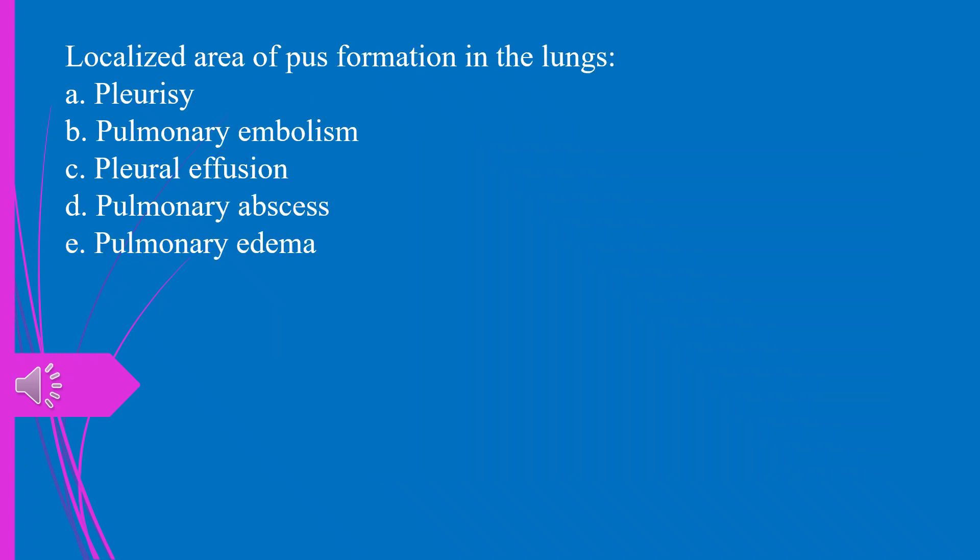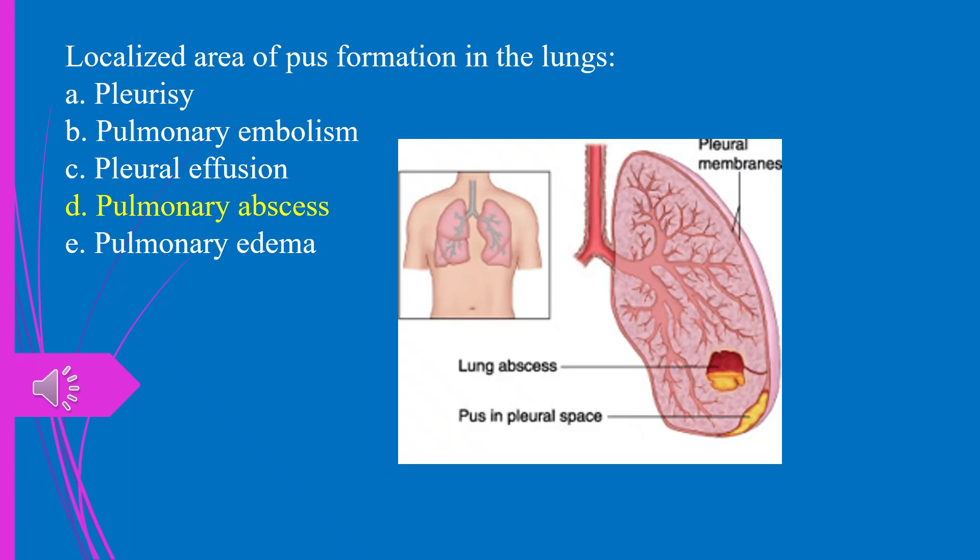A localized area of pus formation in the lungs, A. Pleurisy. B. Pulmonary embolism. C. Pleural effusion. D. Pulmonary abscess. E. Pulmonary edema. The answer is D. Pulmonary abscess.